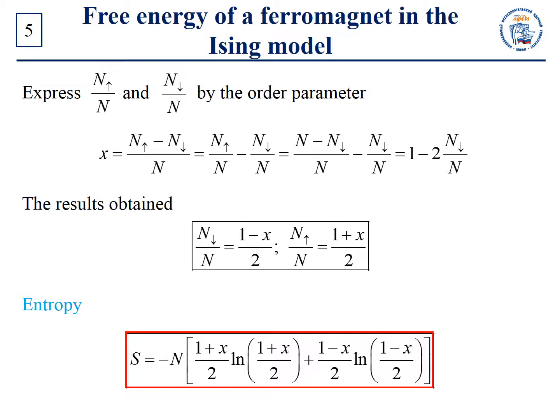Note that at x equal to zero — no order — entropy is equal to N times the natural logarithm of 2. So gamma is equal to 2 to the N-th power, meaning every magnetic moment has an arbitrary direction.